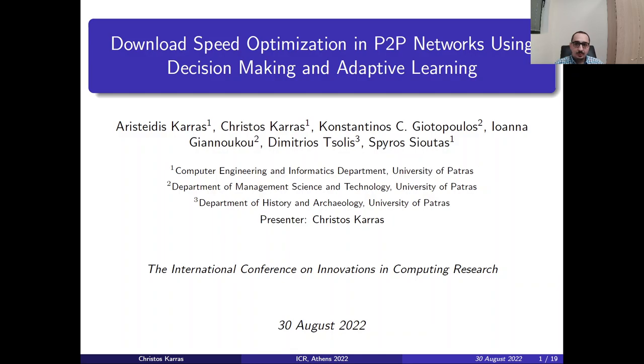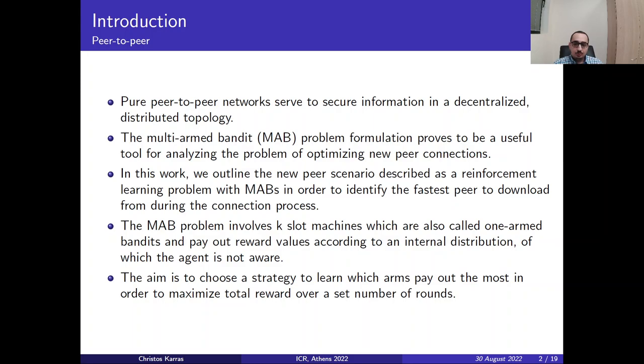Hello to everyone once again. My name is Chris Karas. I will be presenting the paper entitled Download Speed Optimization in Peer-to-Peer Networks Using Decision-Making and Adaptive Learning. This is a joint work with my brother and colleague Aristides and the professors Konstantinos Iotopoulos, Ioana Iannoukou, Dimitrios Cholis and Spiros Joutas.